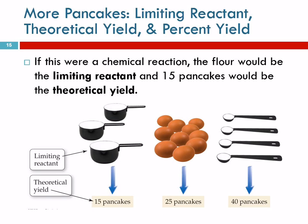So, here's our picture. We would call the flour the limiting reactant — it's the ingredient that limits how much product we can make. And that number of pancakes is the theoretical yield. Because sometimes things go wrong when you're making pancakes: you flip it, and it lands on the floor, and the dog eats it. It happens. We'll come back to this next week.